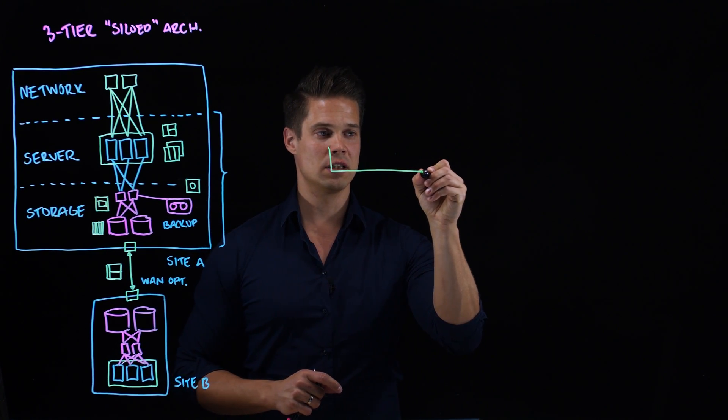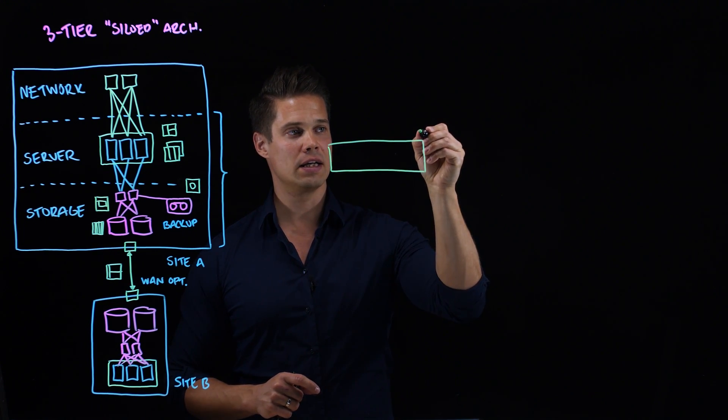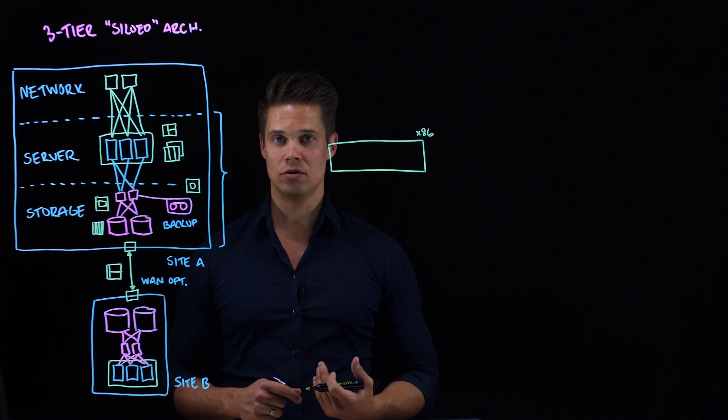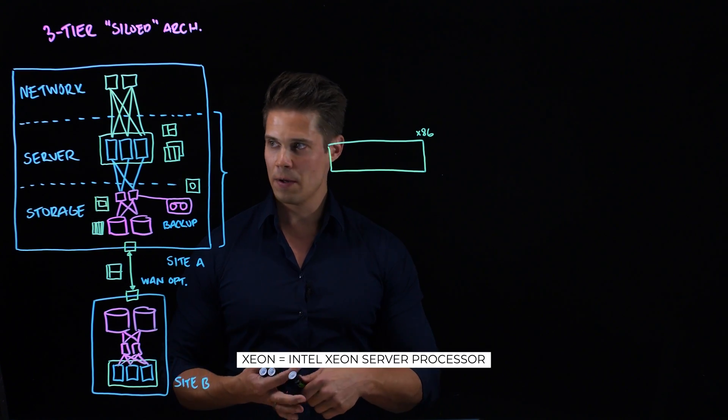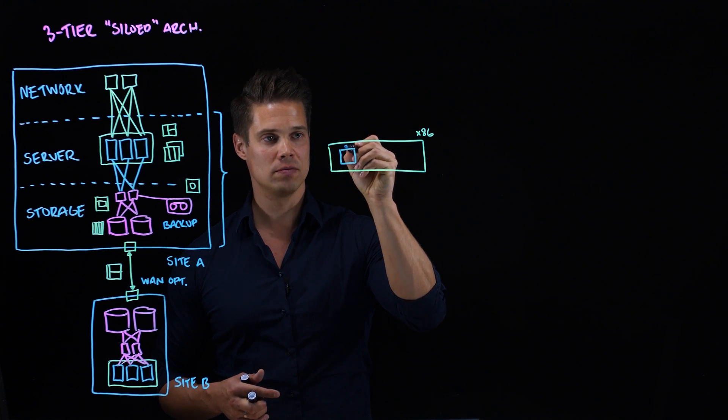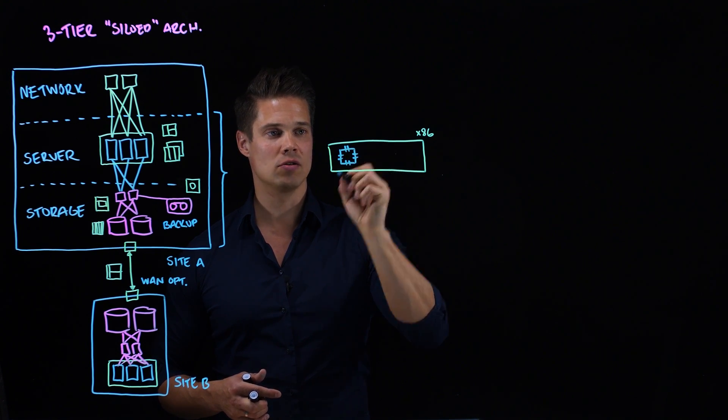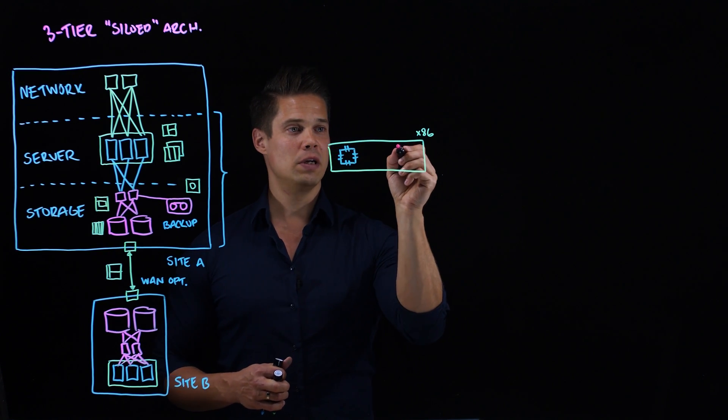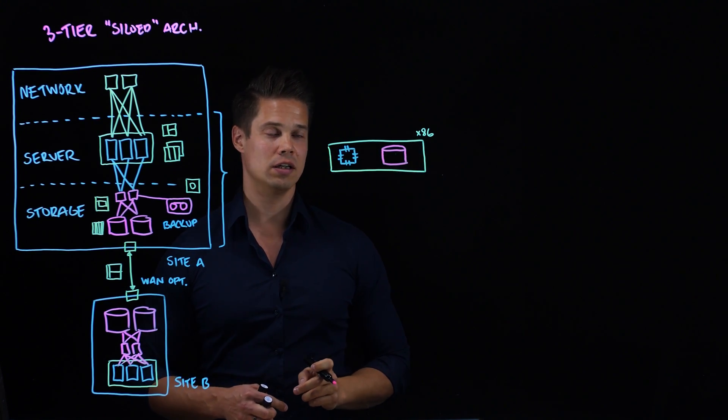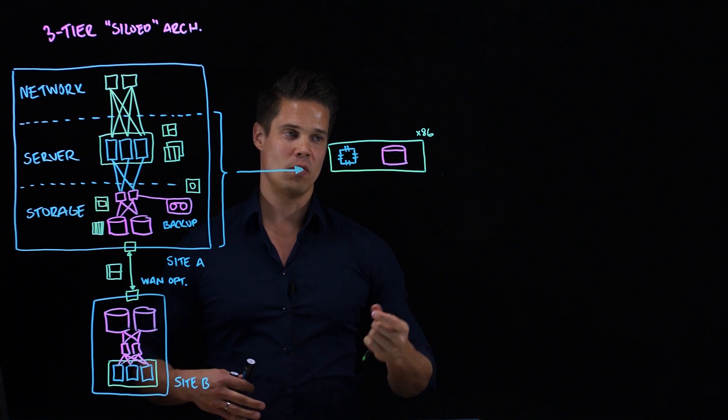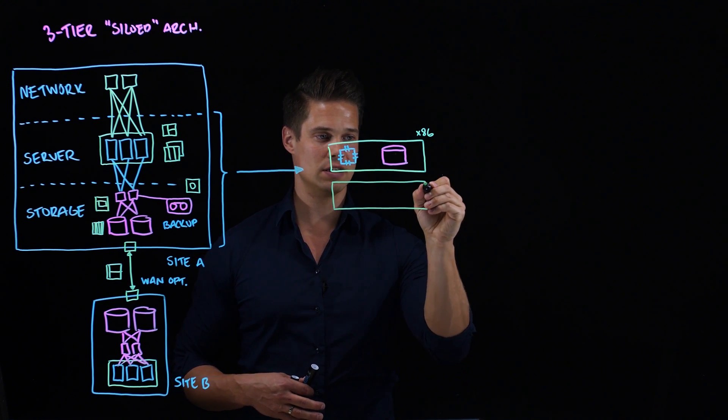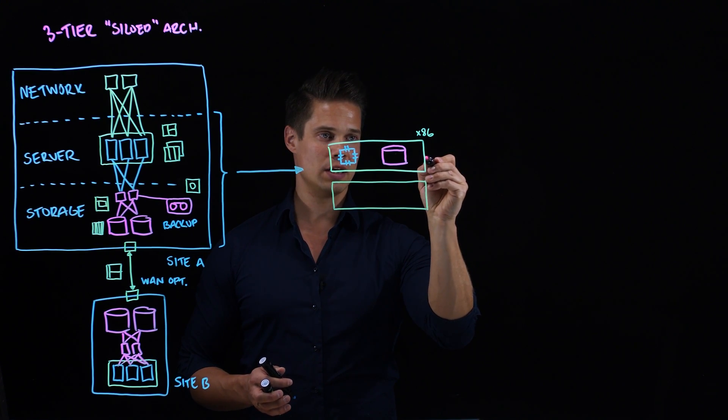Instead, we have just one x86 server. x86 meaning just an industry standard server running Xeons and so on and so on. What we have there inside is a powerful CPU processor that's running all our virtual machines, all the workloads there. Then what we have is lots of storage capacity. It has lots of disks installed in it. Of course, in enterprise environments, we are not trusting any individual component. So we have to have two of these devices here.